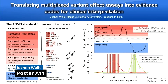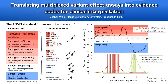Variant effect maps promise to stem the ever-growing tide of variants of uncertain significance by providing experimental evidence. These maps excel at quantifying the impact of variants on the molecular function of a protein, but the relationship between variant effect map scores and health outcomes is generally not linear. A relatively small decrease in protein function may already be sufficient to cause disease. Under current ACMG rules, the same weight is typically applied to all variants found damaging in a given assay and they are included or excluded based on simple thresholds. We propose a more data-driven and nuanced Bayesian approach that calculates the appropriate evidence weight for each variant within a variant effect map.